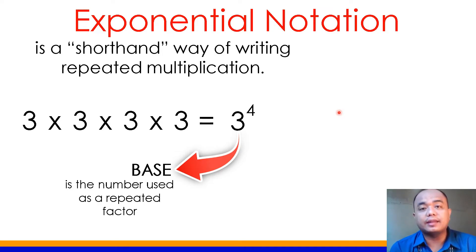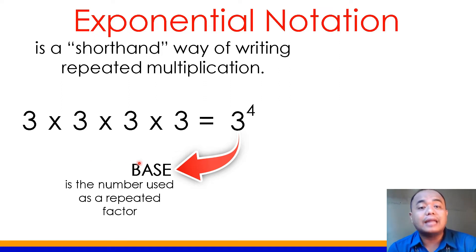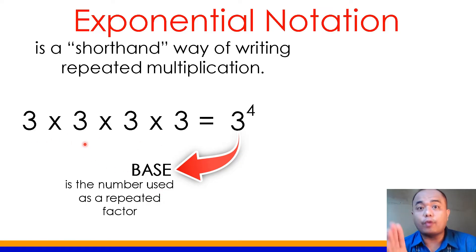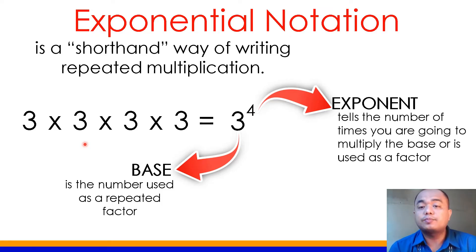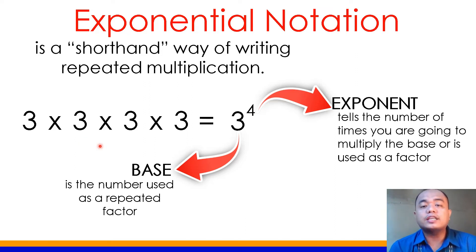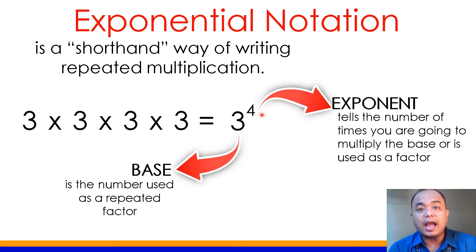Yung number na ginamit na factor na paulit-ulit na minultiply, ang tawag natin dito ay base. As you see here, ang 3 natin dito ay being multiplied 4 times, so siya ang tinatawag nating base. And what do we mean by 4? Ang 4 naman, ang tawag naman natin doon ay exponent. Exponent tells the number of times you are going to multiply the base, or the number of times it is used as factor. Ang exponent ang magsasabi kung ilang beses dapat i-multiply ang base.